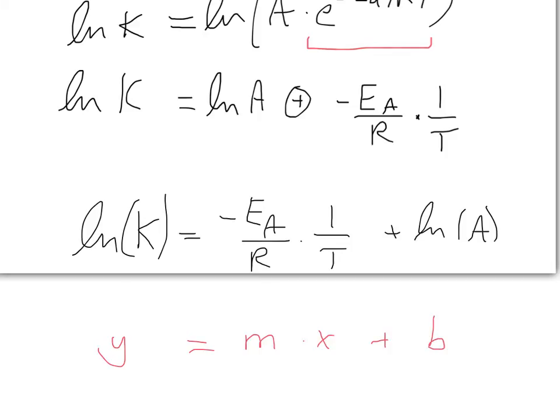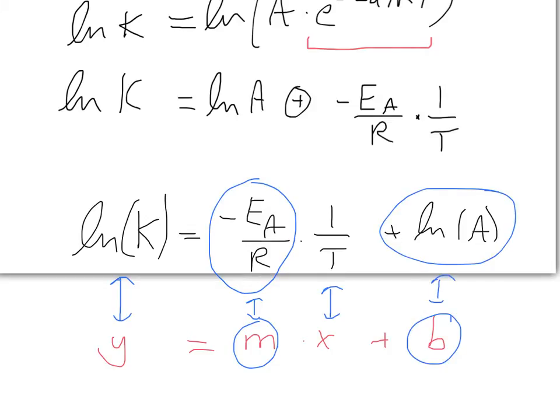If we plot the natural logarithm of the rate constant on the y-axis, and we plot the reciprocal of the temperature on the x-axis, if the Arrhenius equation is correct, which is pretty damn good actually, then that means that we will have a slope of minus the activation energy over R, and a y-intercept of natural log of pre-exponential factor.